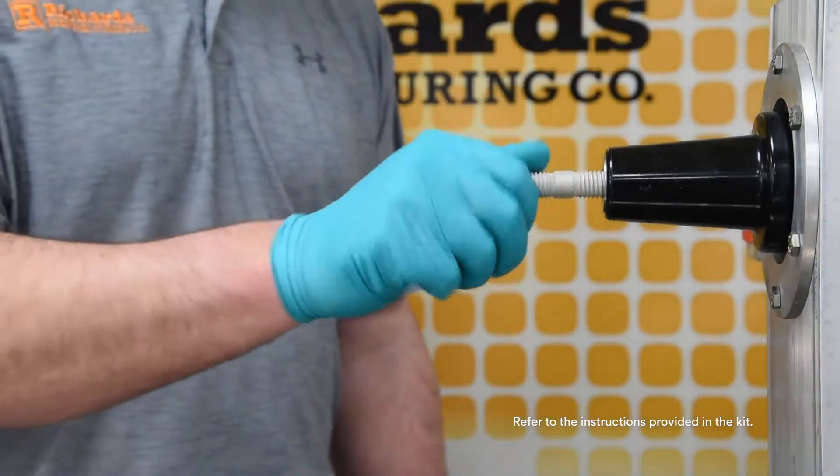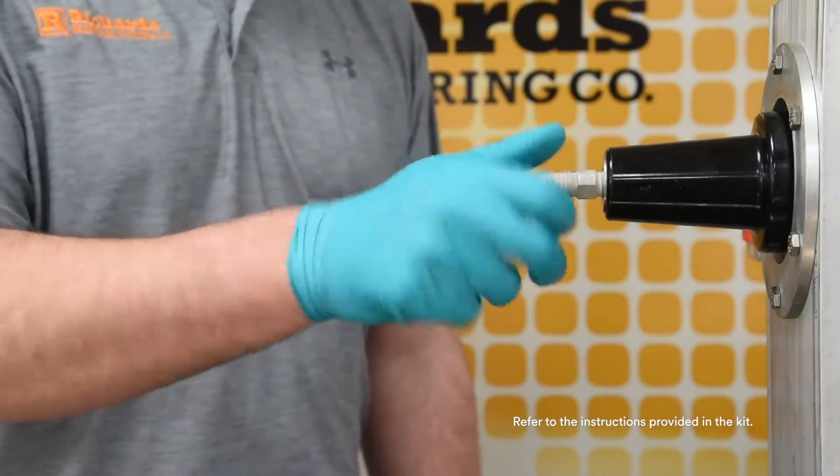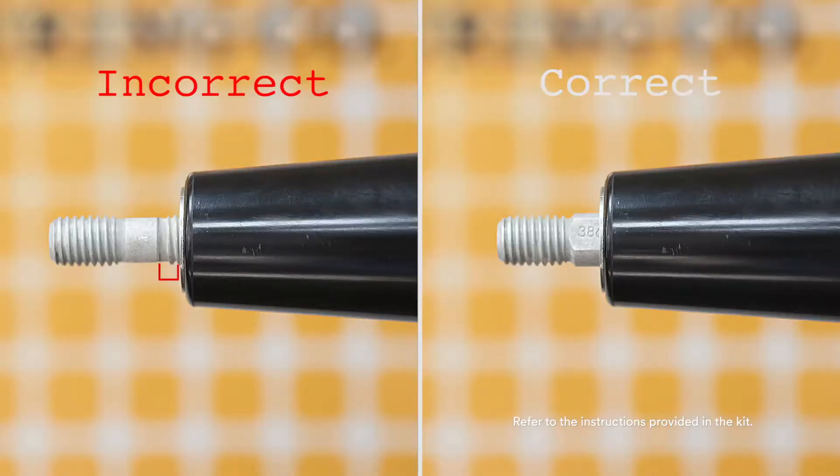Hand tighten stud fully into mating part so no threads are visible on the bushing side. If any threads are visible, confirm correct stud is being used and confirm bushing and stud are not damaged or cross-threaded.